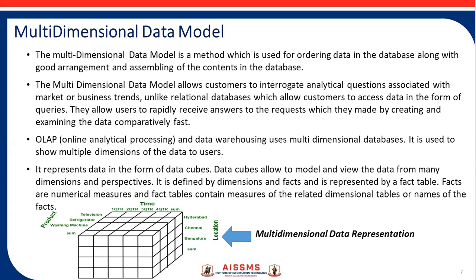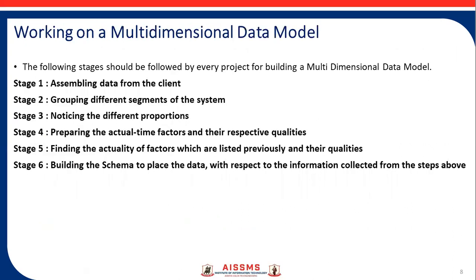Data is represented by a fact table. Facts are numerical measurements, and the fact table contains measures of the dimensional table. This is the figure of multidimensional data representation. These are the working stages of the multidimensional data model. The first stage is accessing data from the client. Then, grouping different segments of the system. Next, noticing the different propositions, referring to the actual time factors and their respective qualities. Then finding the quality of factors listed previously. Building the schema to place the data with respect to the information collected from the steps above.